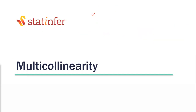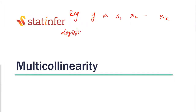Remember, in linear regression we did Y versus X1, X2 … XK — this is linear regression. In logistic regression also Y versus X1, X2 … XK. What is the major difference from linear to logistic? Here Y was continuous; here Y is categorical.